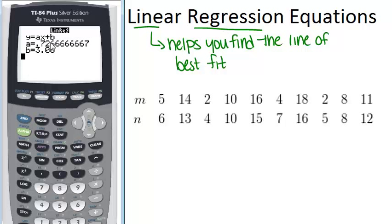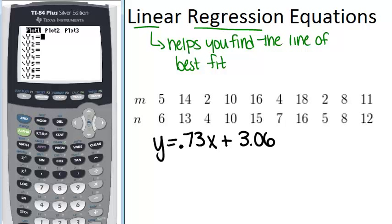And we can see an equation here. It tells us our value for a, that's the slope of the line, and our value for b, which is the y-intercept. So let's write this down. The equation of our line of best fit is y equals .73, I rounded that, x plus 3.06. Now we can go in and plot that line above our scatter plot to see how they match up.